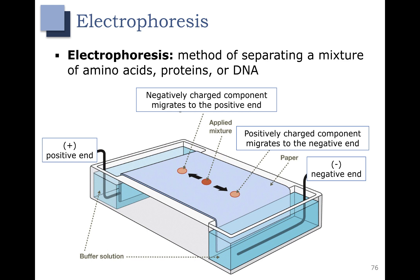It takes advantage of the fact that amino acids change their structure at different pHs. If you have an amino acid that has lots of positive charges or is positively charged, it will migrate towards the negative end of an electrophoresis gel. If you have an amino acid that is negatively charged, it will migrate towards the positive end of an electrophoresis gel.